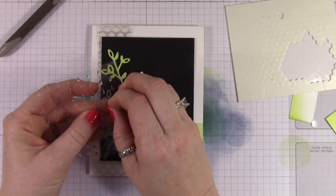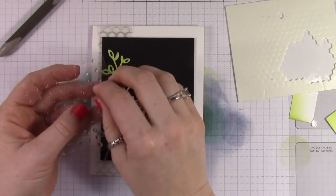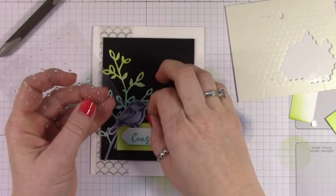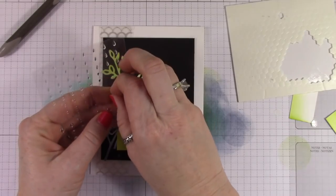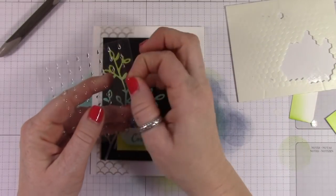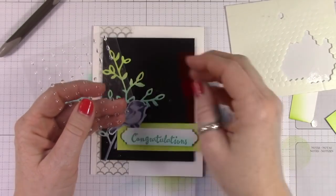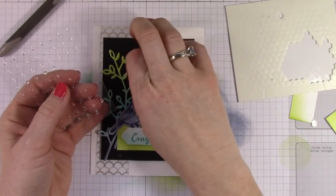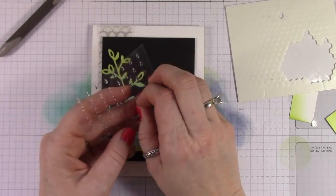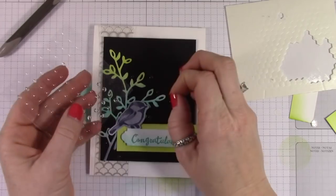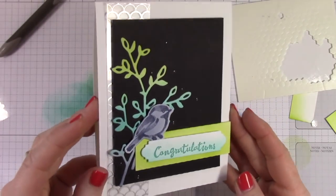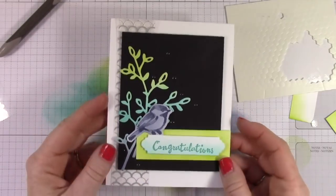Now, I also have these really awesome teeny tiny clear epoxy stickers. You can get these from Stampin' Up. I love these. They are just a little raised clear bump, and I'll be honest, you can't see them that well in the video, but they are so cute, and they really add a lot of pizzazz to your cards.